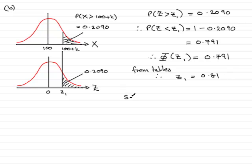Now, since we know that Z is always equal to the observed value minus the mean over the standard deviation, it therefore means that our Z value is 0.81, and that equals the observed value, which is 100 plus K. Then we subtract the mean, which was 100, all divided by the standard deviation, which was 15. Working this out, the hundreds cancel, we just get K over 15. Therefore, we have 0.81 equals K over 15.